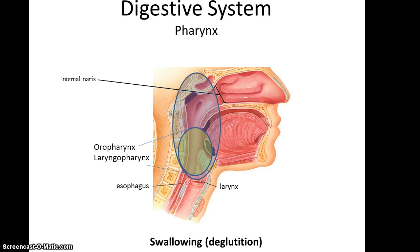The pharynx is basically the back of the throat. As discussed in the respiratory system unit, the pharynx goes from the internal nares of the nasal cavity all the way down to just above the larynx and esophagus. For digestion, only the oral pharynx and the laryngopharynx come into play, and they are involved in the act of swallowing, or deglutition. There are three sets of muscles that help do this: the superior, middle, and inferior constrictor muscles. That's it for this portion of the talk.